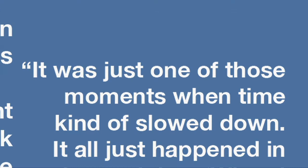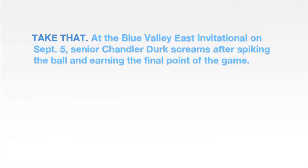Now with this information, let's write a caption using the four-step process. First we have the attention getter — something like 'Take That.' Next is B, the basic information. This is your first sentence. So you could write: 'At the Blue Valley East Invitational on September 5th, senior Chandler Dirk screams after spiking the ball and earning the final point of the game.' This sentence describes what's happening, identifies the person, and adds information that we can't see. Plus, it's in present tense.